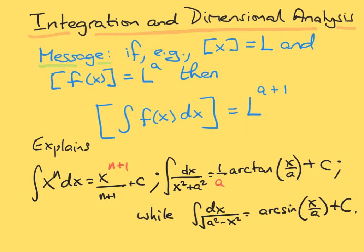We're going to understand why on the next slide, and we're going to look at three examples. In the first case, the integral of x^n will have dimensions of L to the n, and when we add one to the power — shown here in red — this is explained by our result. It does not explain why there is an n+1 on the bottom, but it explains the increase in the power. The second integral, which gives an arctangent, will explain why there is a factor of 1/a in front. And for the third integral, an arcsine, we'll explain why there is no 1/a factor in front.